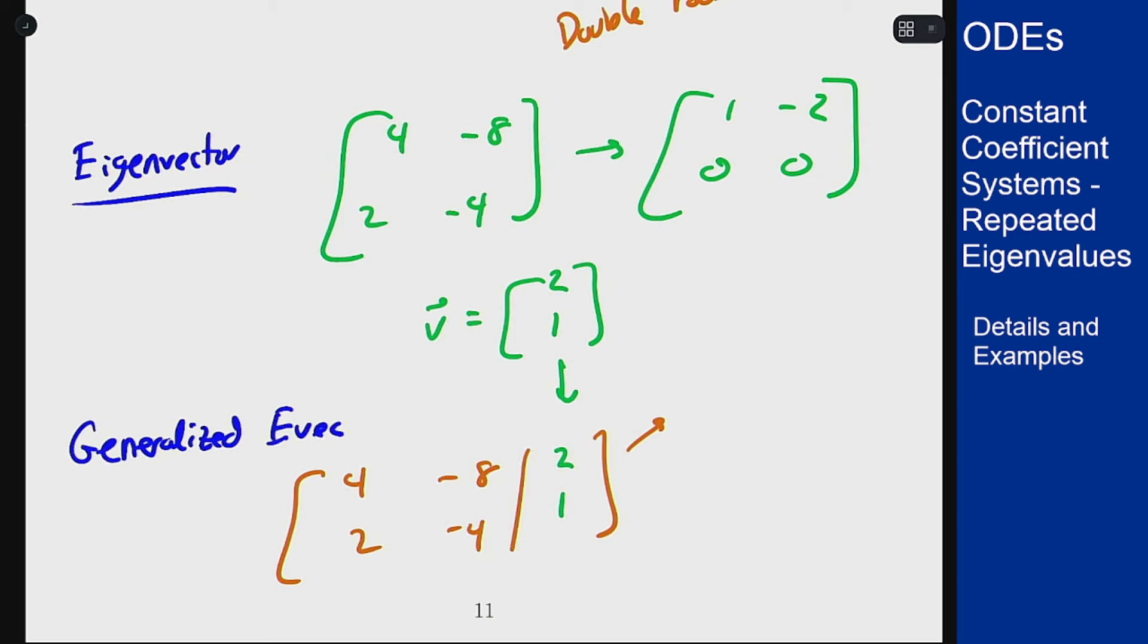If we row reduce this, we end up with [2, -4, 1; 0, 0, 0]. It tells me that 2w1 minus 4w2 equals 1. I can choose any w1, w2 that I want to satisfy this. To give a contrast to the one we found previously, let's use w2 equaling 1/4 and w1 equals 0 as our choice here. So my generalized eigenvector is [0; 1/4].